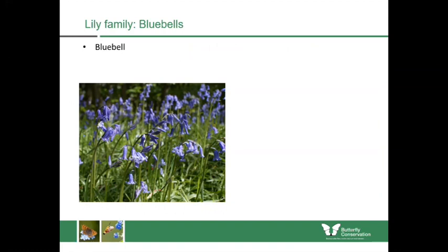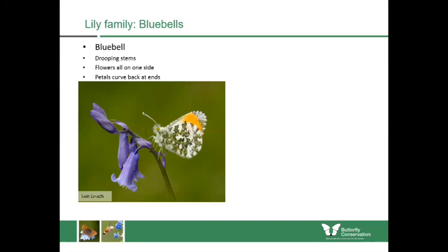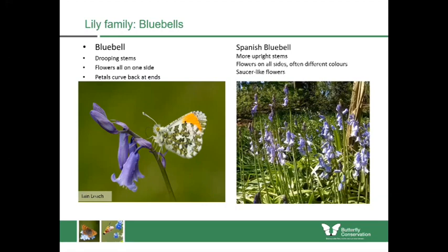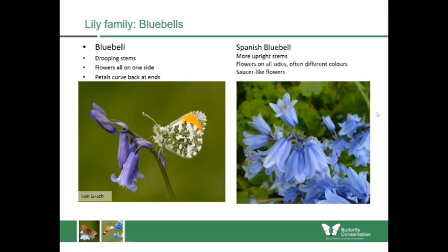Staying with the lily family, the English bluebell — our native bluebell — has drooping stems with all flowers on one side of the stalk, and petals that curve back at the ends. The Spanish bluebell is an introduced species which unfortunately can hybridize with our native, producing intermediate forms. Spanish bluebells are normally more upright, have flowers on all sides of the plant, can be white or pink, and the petals don't curve backwards like the English bluebell.